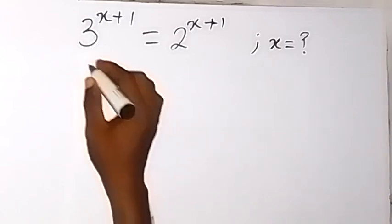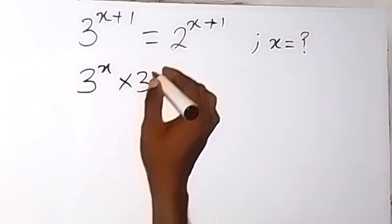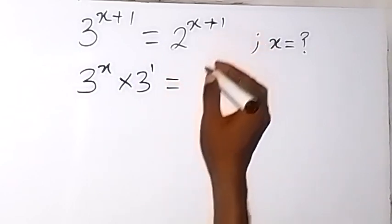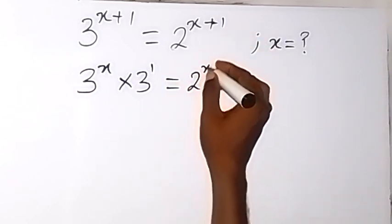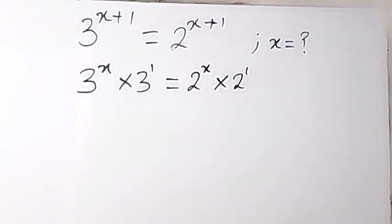Now from here we can separate this as 3 raised to power x times 3 raised to power 1 from law of indices, and also on this side we have 2 raised to power x times 2 raised to power 1. From here let us separate the power of x on one side.